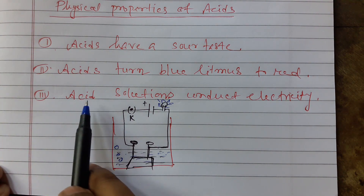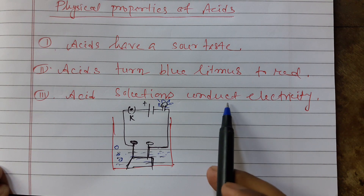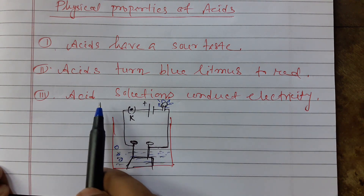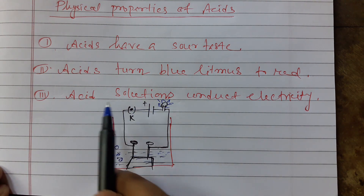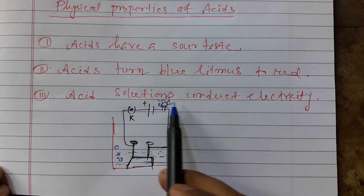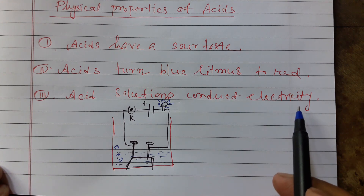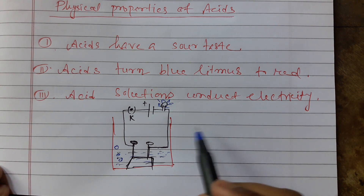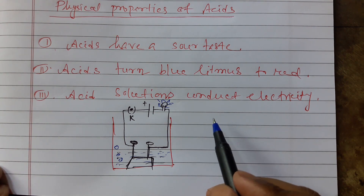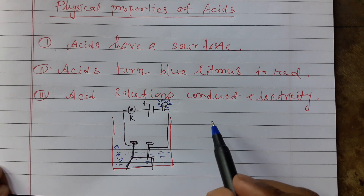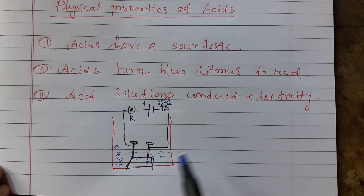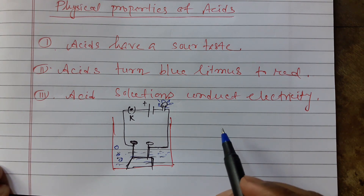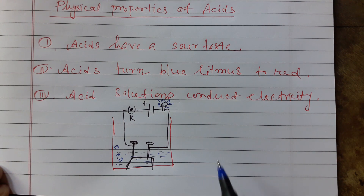So we write: acid solution conducts electricity. Today we discussed the physical properties of acids. We will discuss the chemical properties in the next class in detail. Thank you for watching. Have a good day.